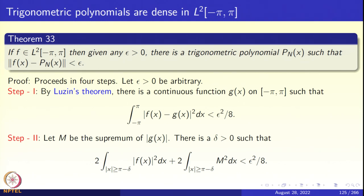By Luzin's theorem, there is a continuous function g on (−π, π) such that the integral from −π to π of |f(x) − g(x)|² dx is less than ε²/8. That is step 1.